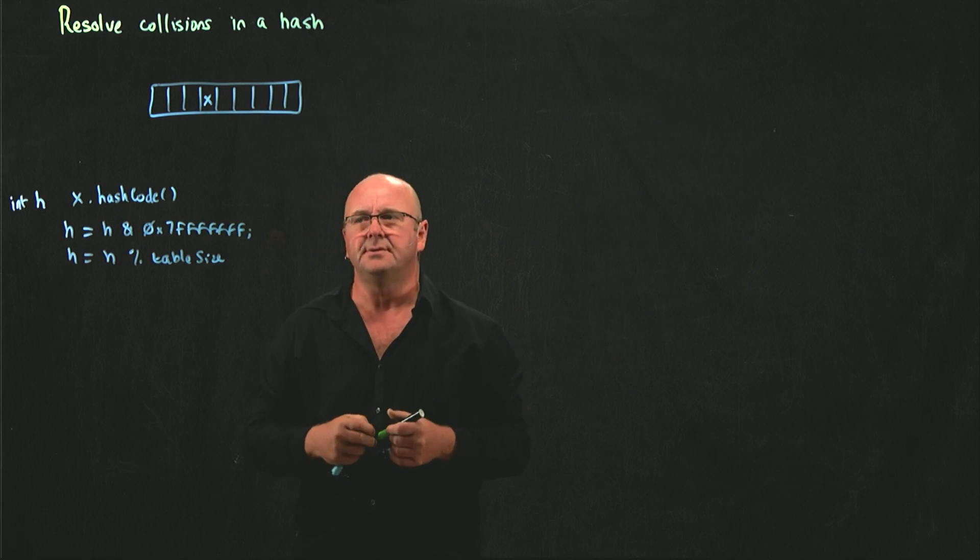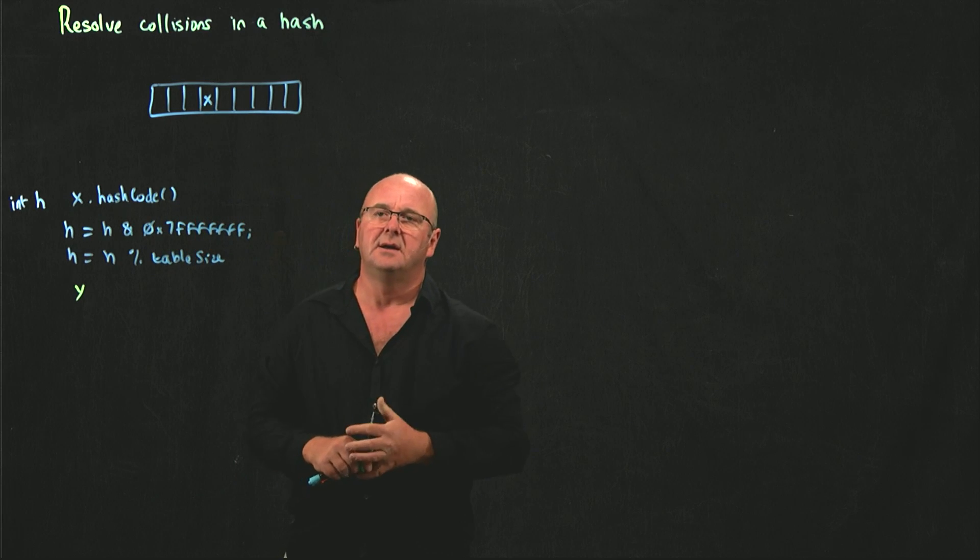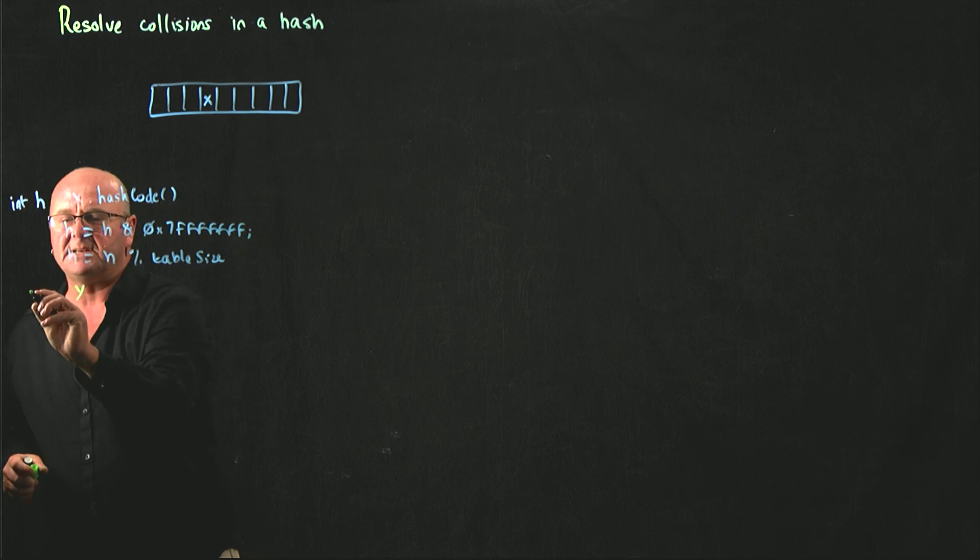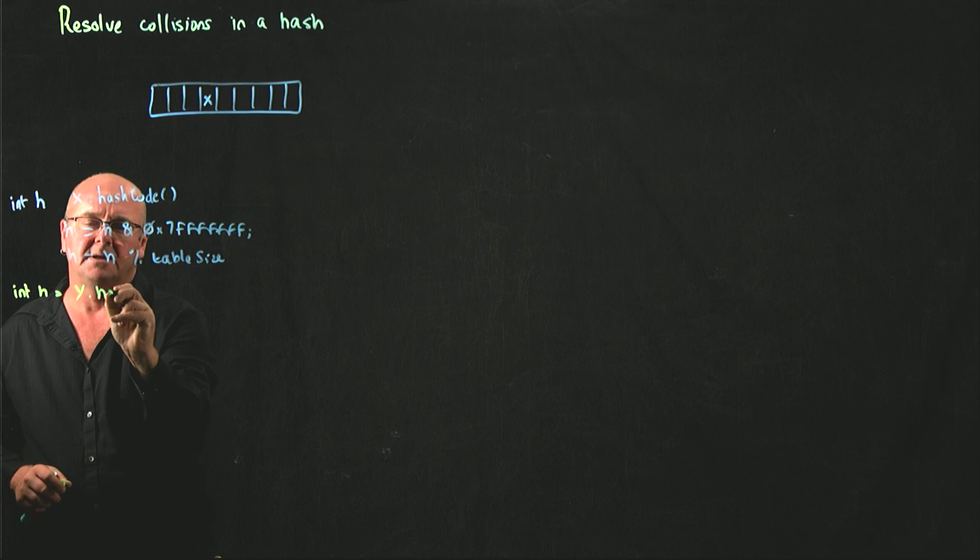What happens, what do we do when we've got another element y and we go through the same approach? So, we take our hashValue, hashCode.